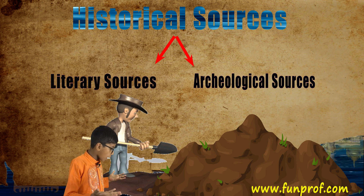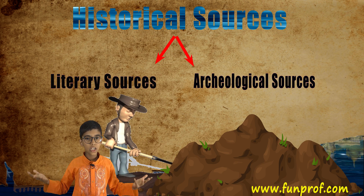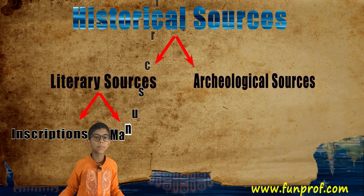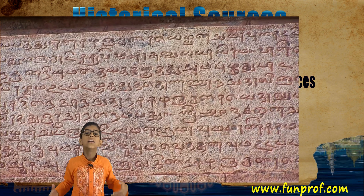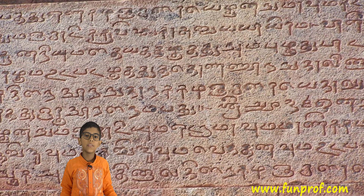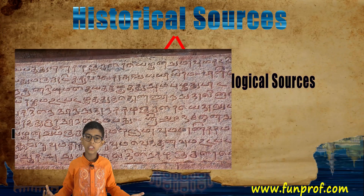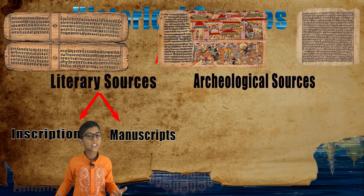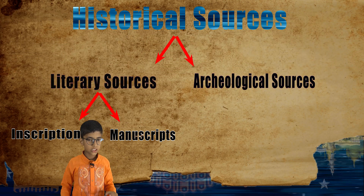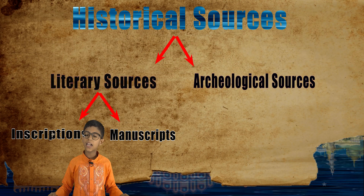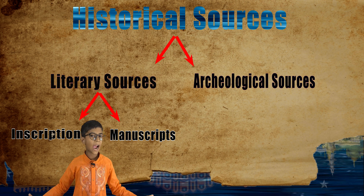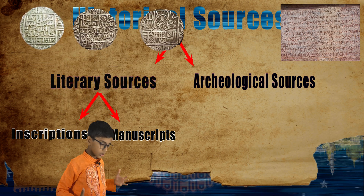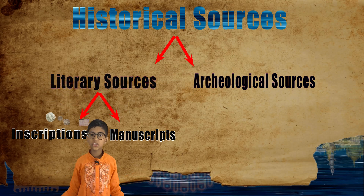We found literary sources — inscriptions and manuscripts. They are writings written by old people on things. Manuscripts are written on soft things such as palm leaves. Inscriptions are a little different; they are written on hard things such as stone and metal. These were literary sources.